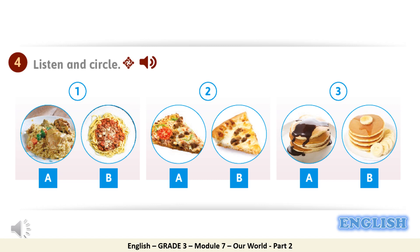Activity 4: Listen and circle. Number 1: What's your favorite food, Hasan? My favorite food is chicken majboos. Number 2: What's your favorite food, Rita? My favorite food is pizza. What do you want on your pizza? I want some cheese, meat and vegetables.